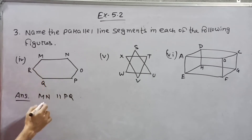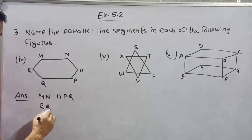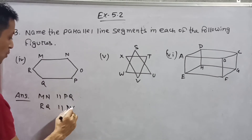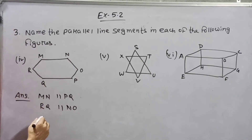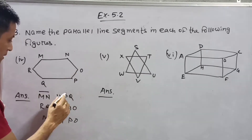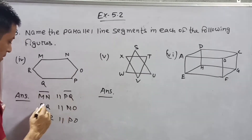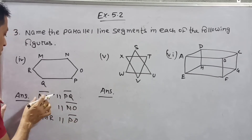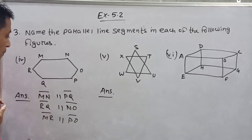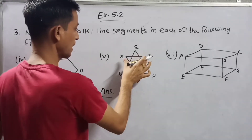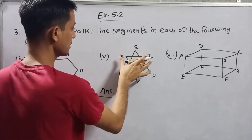Next: RQ is parallel to NO. Then MR is parallel to PO. You can use this symbol for line segment as you wish.